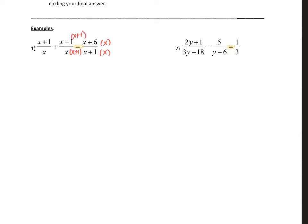Whatever I do to the bottom, I have to do to the top. And since this has an x, this also needs an x plus one. So now my denominator has an x plus one and an x, an x plus one and an x, an x plus one and an x.